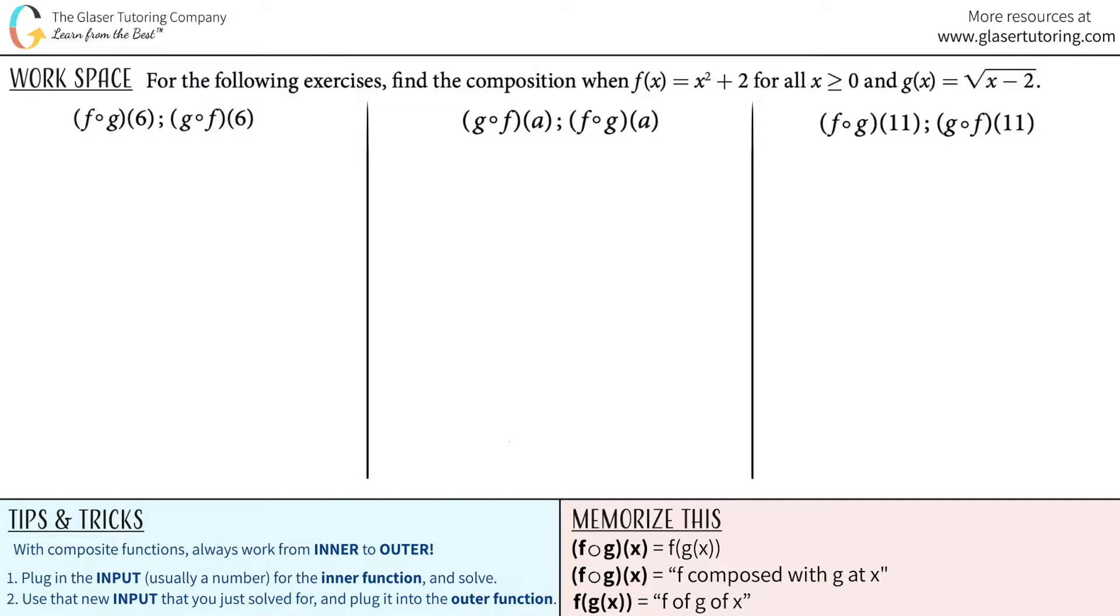For the following exercises, find the composition when f(x) equals x squared plus 2 for all x is greater than or equal to 0 and g(x) equals the square root of x minus 2.